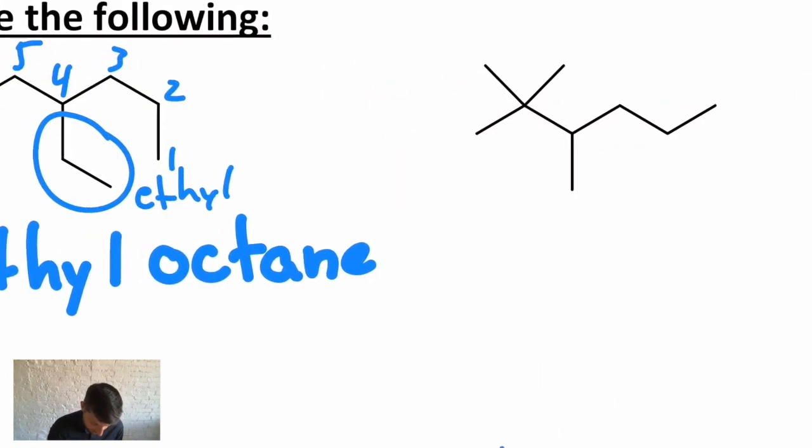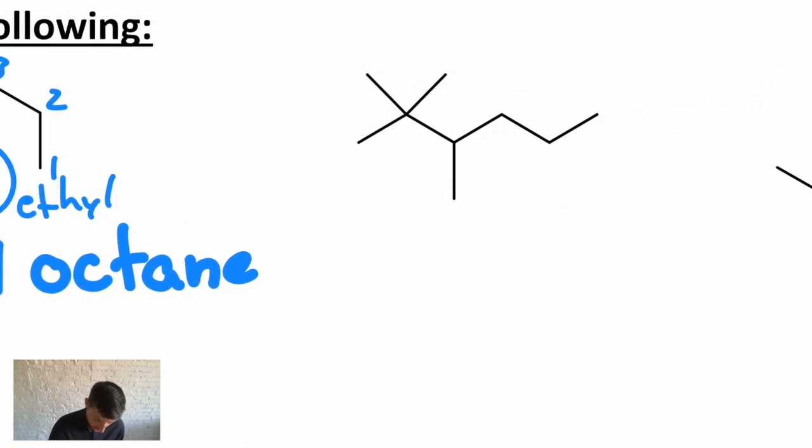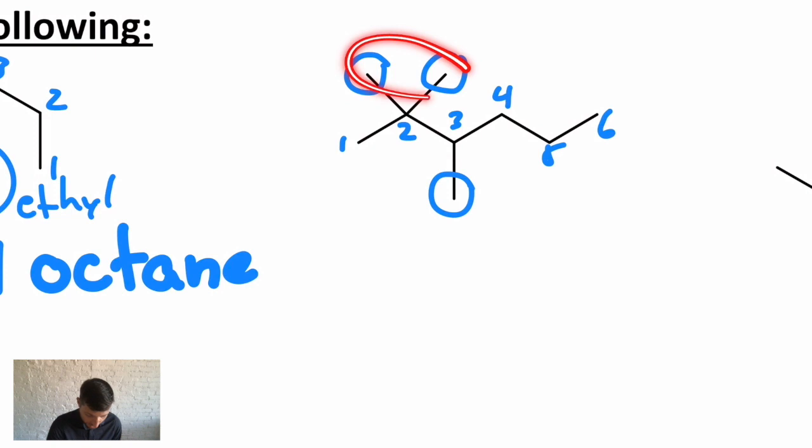So let's try another one right next to it. Again, I'm going to find the longest carbon chain. Looks like left to right: 1, 2, 3, 4, 5, and 6. So this is a hexane derivative. And I have a methyl, another methyl, and a third methyl as branches coming off of that.